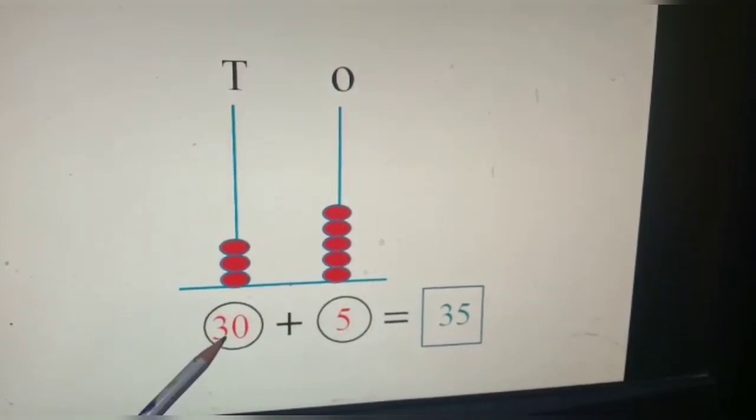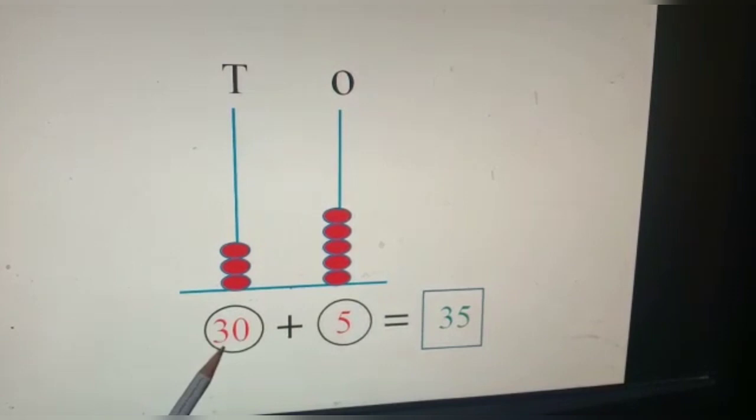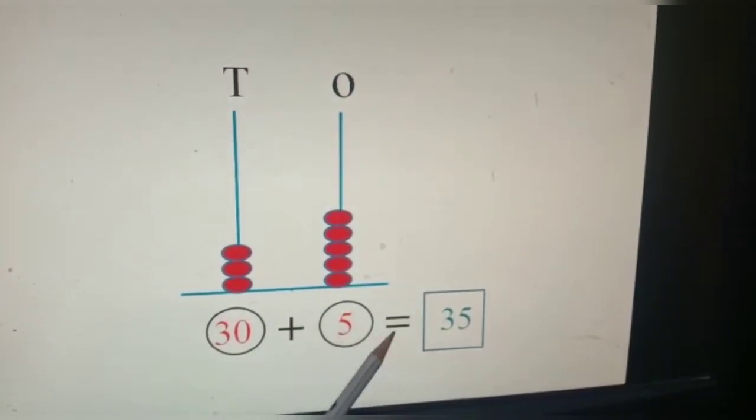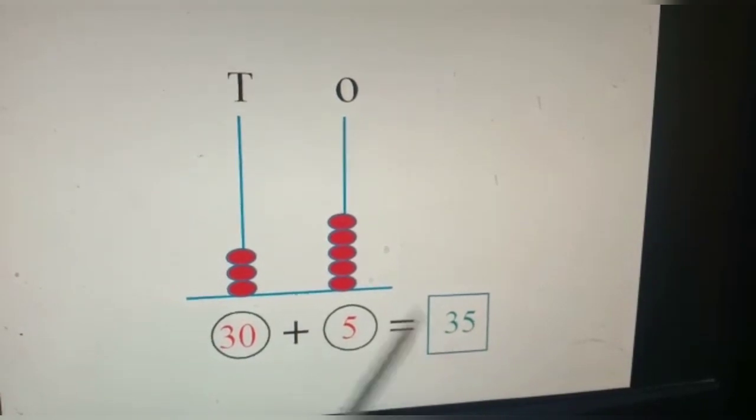So, we write here, thirty. So children, thirty plus five is equal to thirty-five.